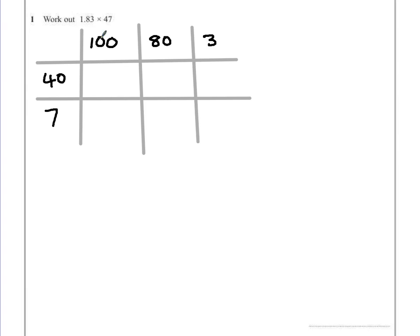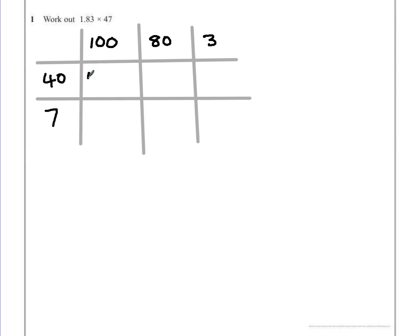You can now multiply out each of the elements, so 4 times 1 is 4, adding on the three zeros. 8 times 4 is 32, adding on the two zeros. 3 times 4 is 12, one zero on the end. 1 times 7 is 7, with two zeros. 8 times 7 is 56, with a zero. 3 times 7 is 21.